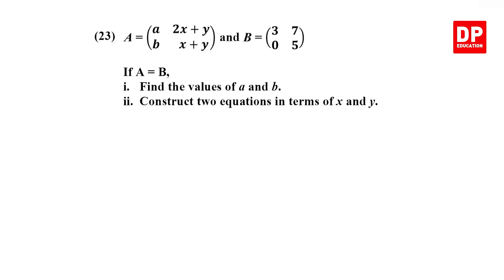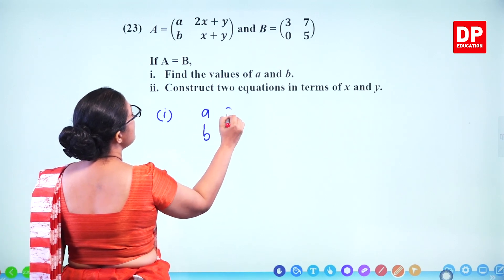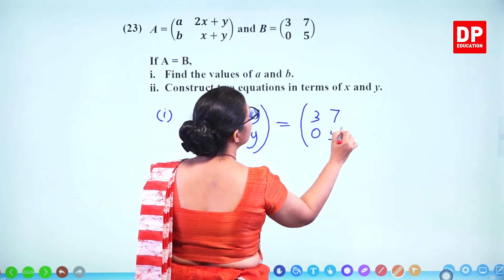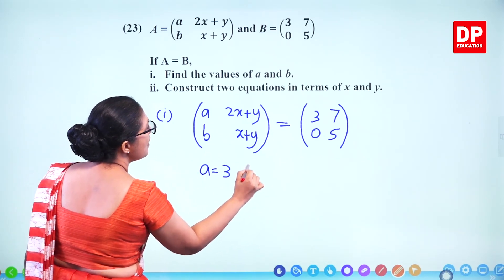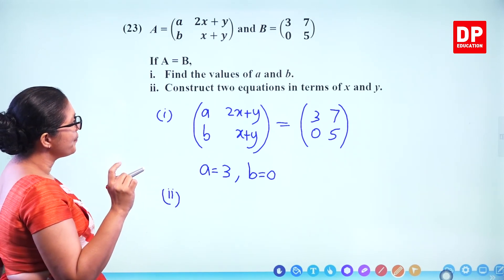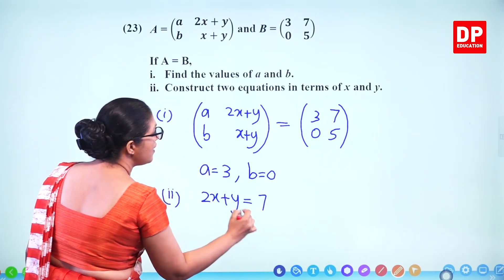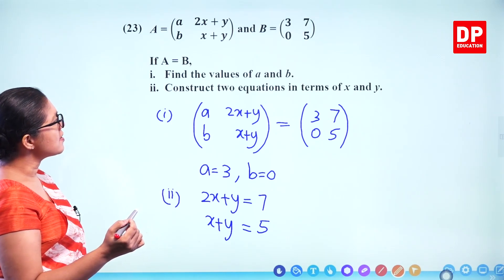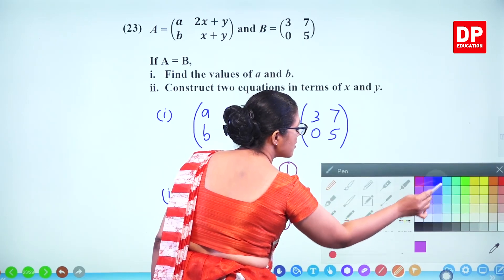Question number 23. If matrix A equals matrix B, find the values of A, B, x, and y. The matrix equation gives AB, 2x+y, x+y equal to 3, 7, 0, 5. Equating corresponding elements: A equals 3, B equals 0. Then construct two simultaneous equations: 2x plus y equals 7, and x plus y equals 5. One mark for finding A and B, and one mark for constructing the two equations.